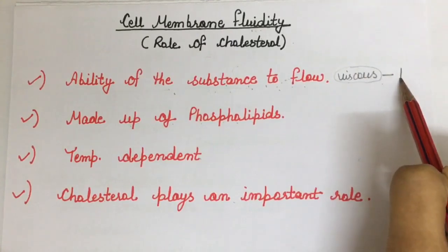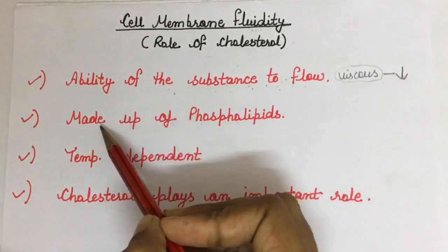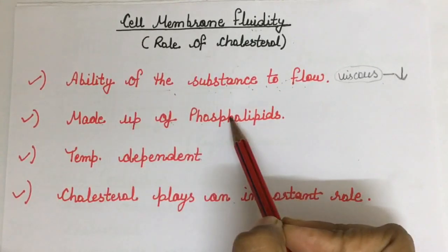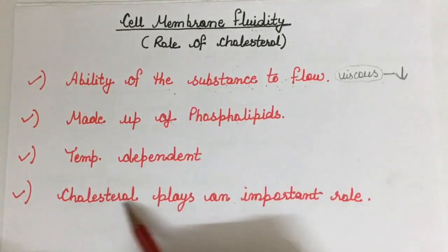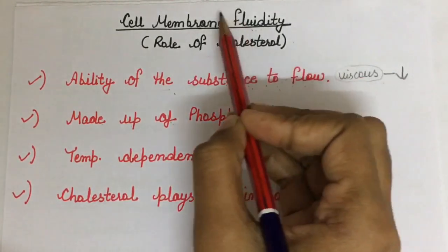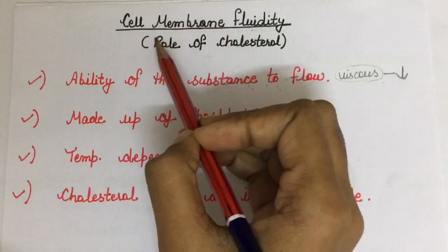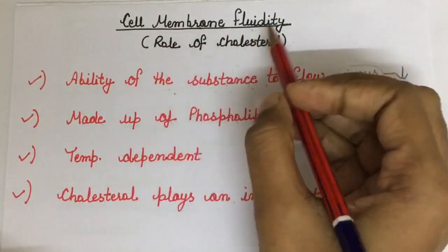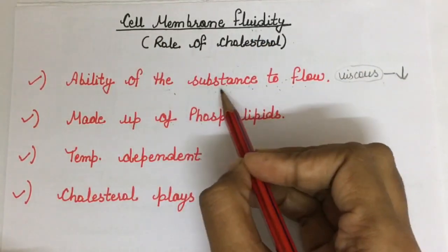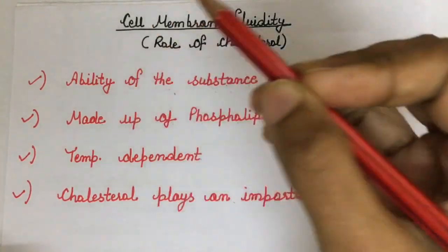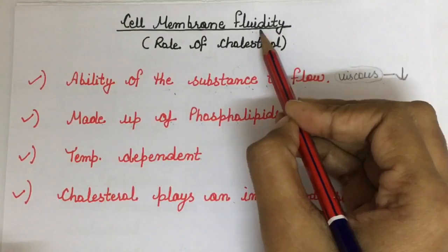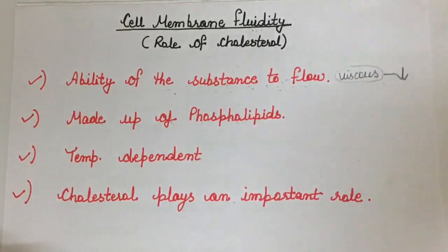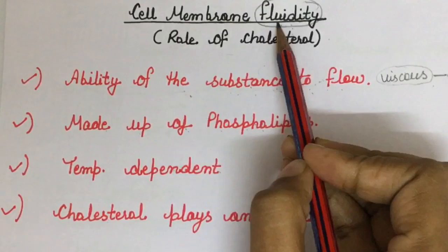If a substance is viscous in nature, its fluidity is very very less. Cell membrane is made up of phospholipids. Its fluidity is temperature dependent and cholesterol plays an important role in maintaining the fluidity of the cell membrane. If the cell membrane has an abundance of polyunsaturated or unsaturated fatty acids, it is going to enhance this fluidity.